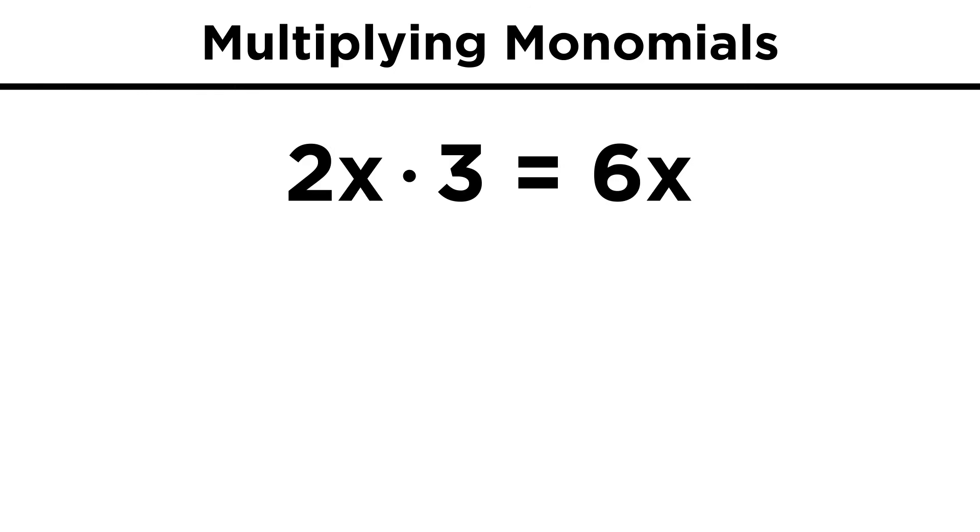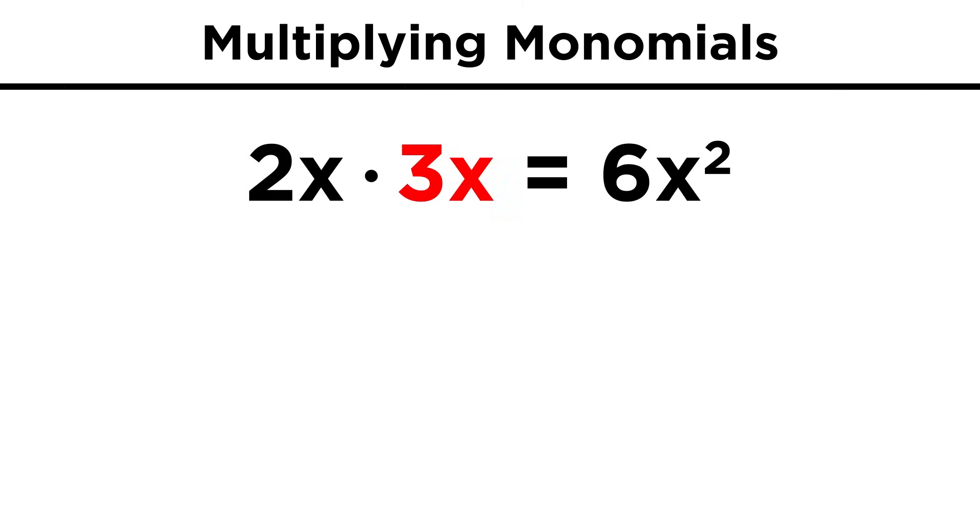First we can multiply monomials. Two x times three is six x, just the way two apples times three is six apples. Two x times three x is six x squared. In this case, the numbers multiply as do the x's, so that's easy enough as well.